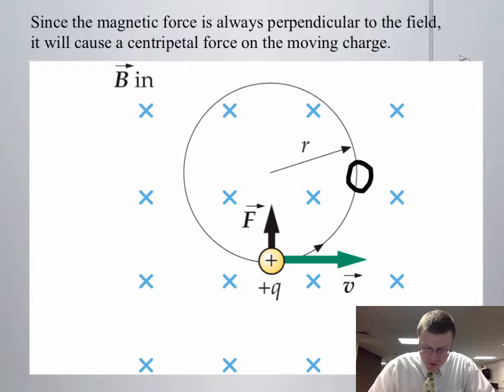That's going to force that charge to move right to here. Things want to move in straight lines, so you can do your right-hand rule again, and V cross B gives you a force in towards the center of the circle.